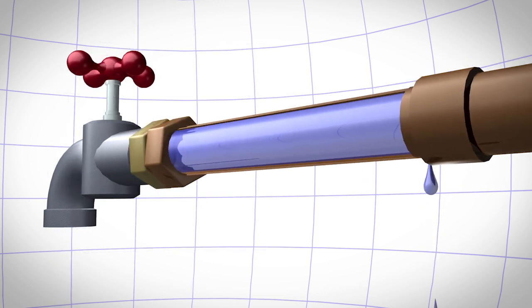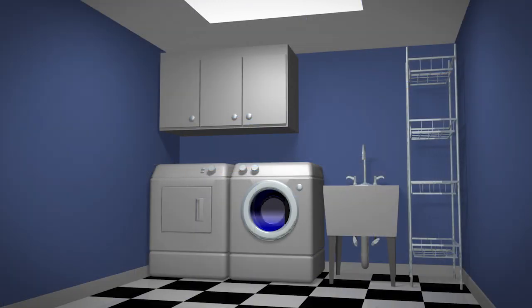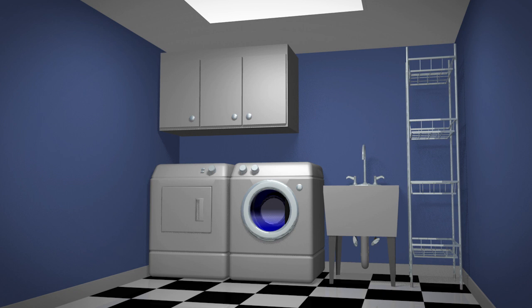Water hammer can be hard on pipes, weakening the connections and causing leaks. Water hammer can also be hard on your water heater, washing machine, and other appliances.